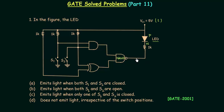We have to find the output of this NAND gate. If it is equal to 0, the LED will be ON; if it is equal to 1, the LED will be OFF. Option A says the LED will emit light when both S1 and S2 are closed. Option B says the LED will emit light when both S1 and S2 are open. Option C says the LED will emit light when only one of S1 and S2 is closed. Option D says it does not emit light irrespective of the switch positions.